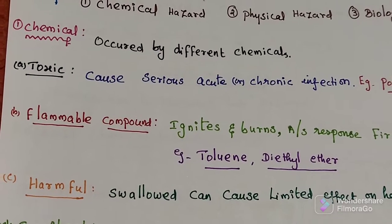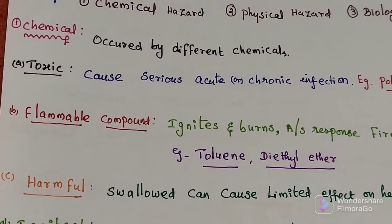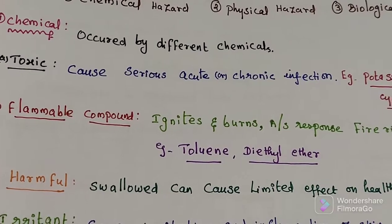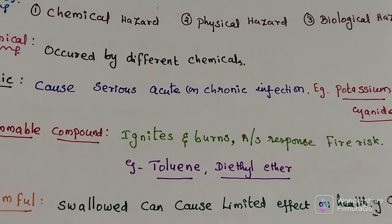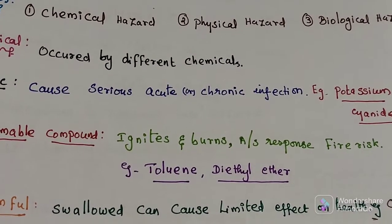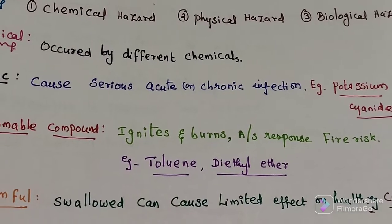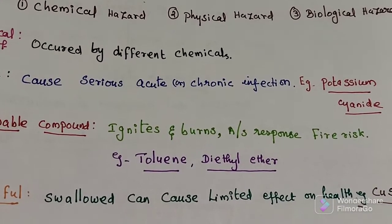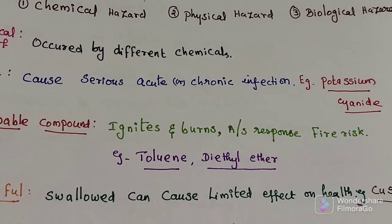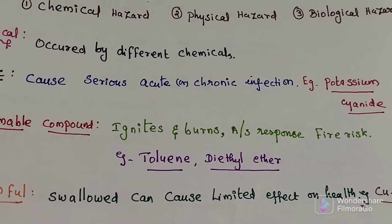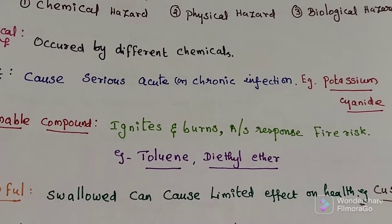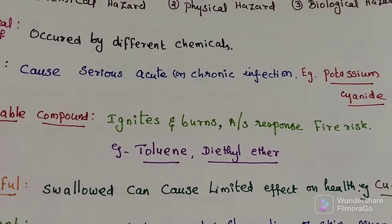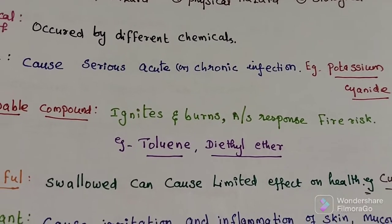The second type is flammable. A flammable chemical is one which ignites — that means it causes fire and burns. It is responsible for fire risk in the laboratory. Examples include toluene and diethyl ether.